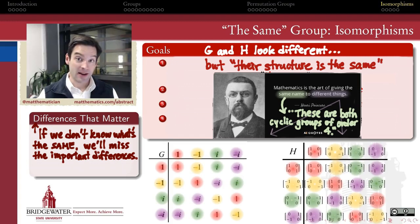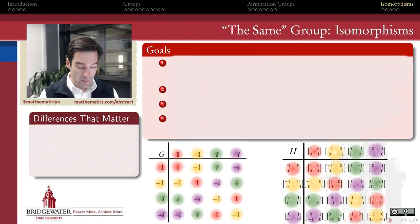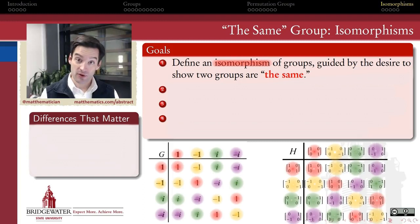The notion of an isomorphism in abstract algebra is a comparison between two groups, and a comparison in particular that shows that two groups have the same structure. So how does it work? What are our goals? First of all, we want to talk about how to define an isomorphism between two groups, guided by this desire to show that those two groups are in fact the same. So in other words, if I want to conclude that the group G is the same as the group H, what kind of mathematical object do I need to show exists, or do I need to construct in order to establish that sameness?